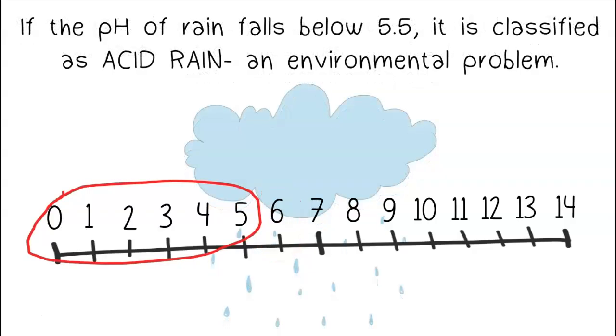If the pH of rain falls below 5.5, it's classified as acid rain, an environmental problem.